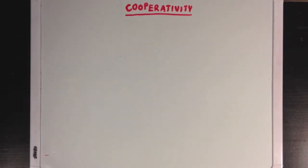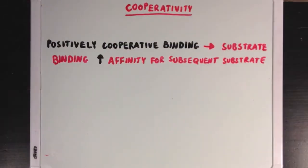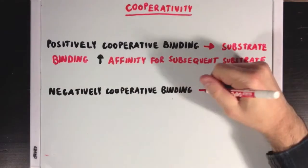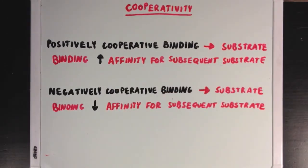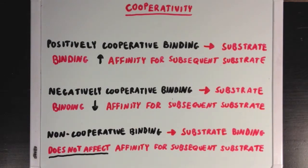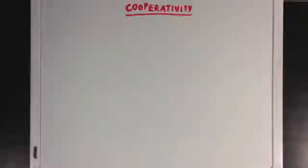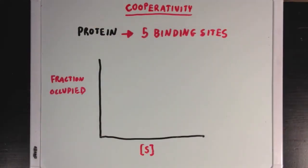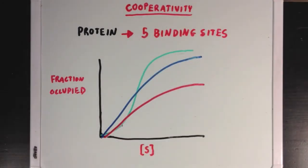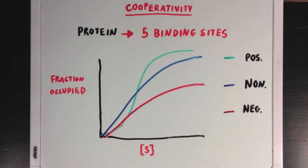With respect to cooperativity, we can define three new ideas. Positively cooperative binding occurs when substrate binding increases the enzyme's affinity for a subsequent substrate. Negatively cooperative binding occurs when substrate binding decreases the enzyme's affinity for a subsequent substrate more than you would normally expect. And non-cooperative binding is where substrate binding does not affect the enzyme's affinity for substrate molecules. If we have a protein with five binding sites and plot the fraction occupied versus substrate concentration, we get three possible curves: the green sigmoidal curve represents positive cooperativity, the blue hyperbolic curve represents non-cooperative binding, and the red curve represents negatively cooperative binding. The effects of cooperativity are only seen after some substrate has already bound, which is why the difference between curves is smaller at lower values.